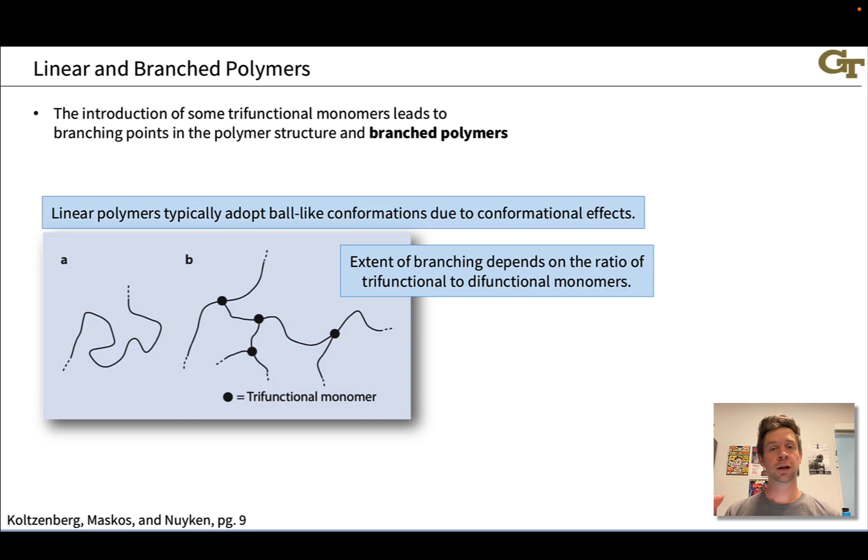Linear polymers contain just a linear collection of monomer units strung together like beads on a necklace. Although we call them linear, they're not straight lines. There's conformational flexibility along the polymer chain, and linear polymers actually tend to adopt conformations sort of like a ball of yarn.